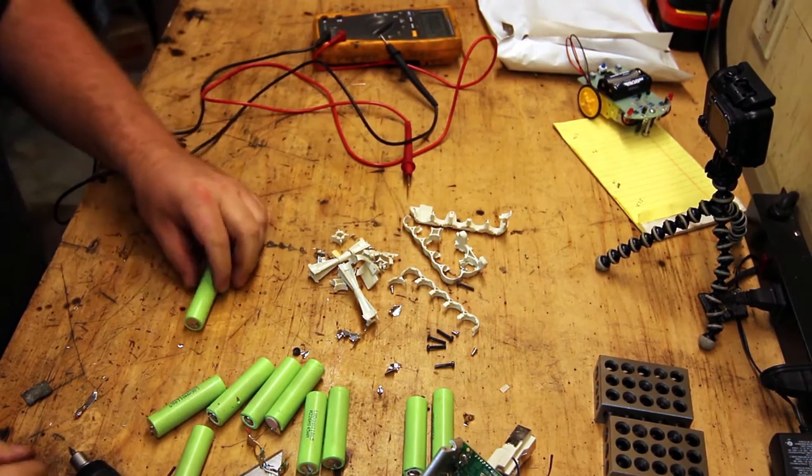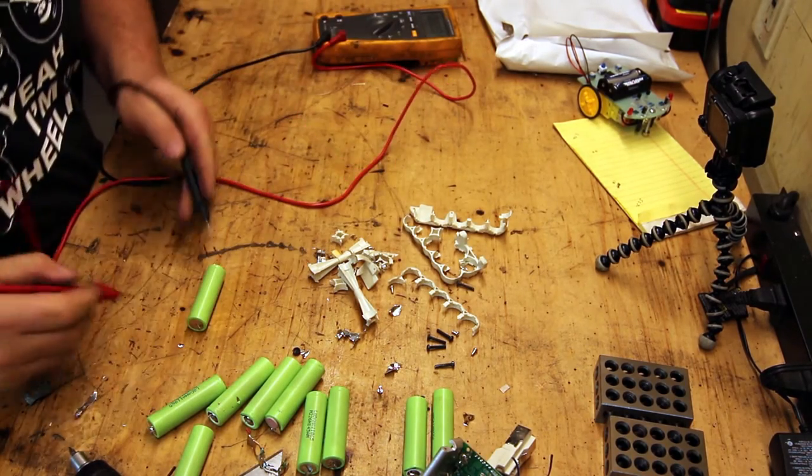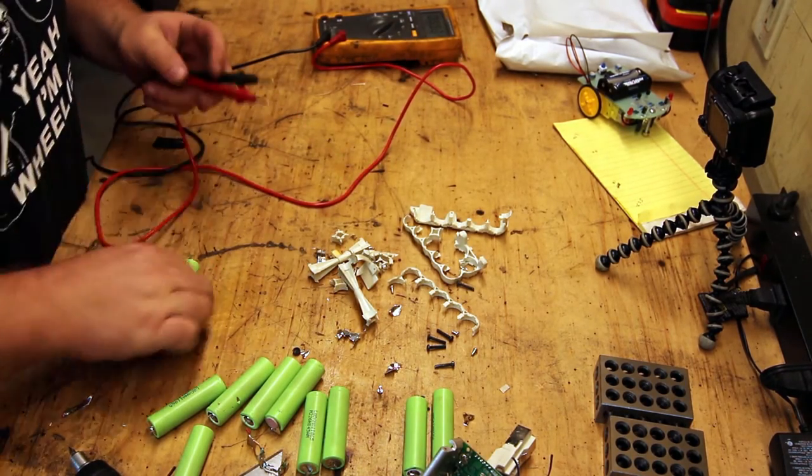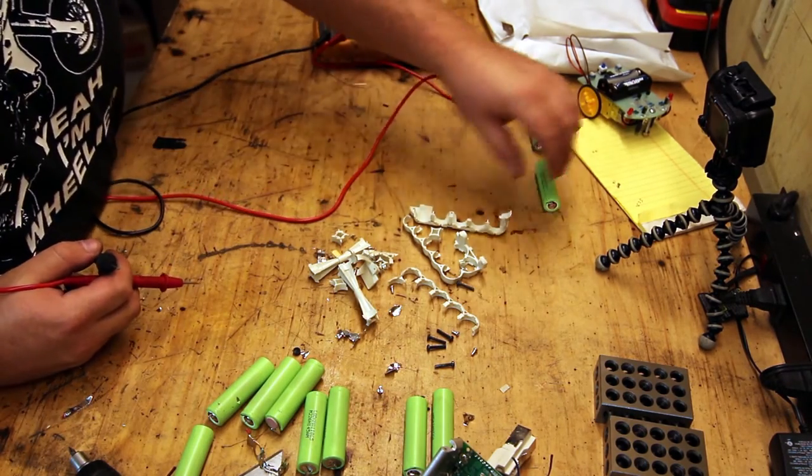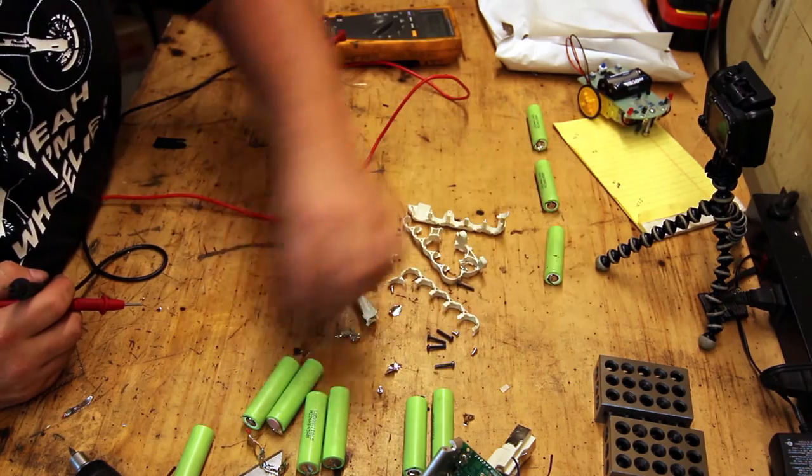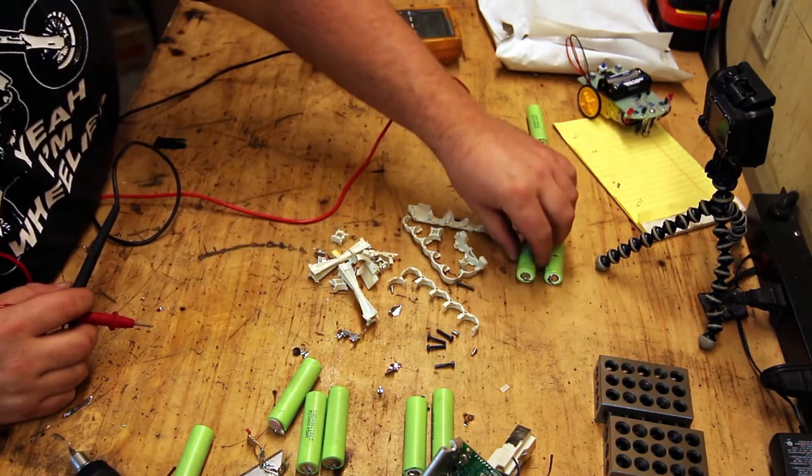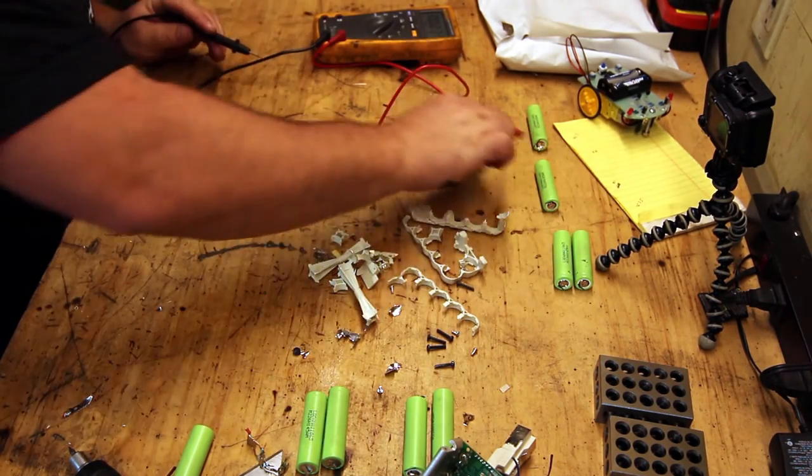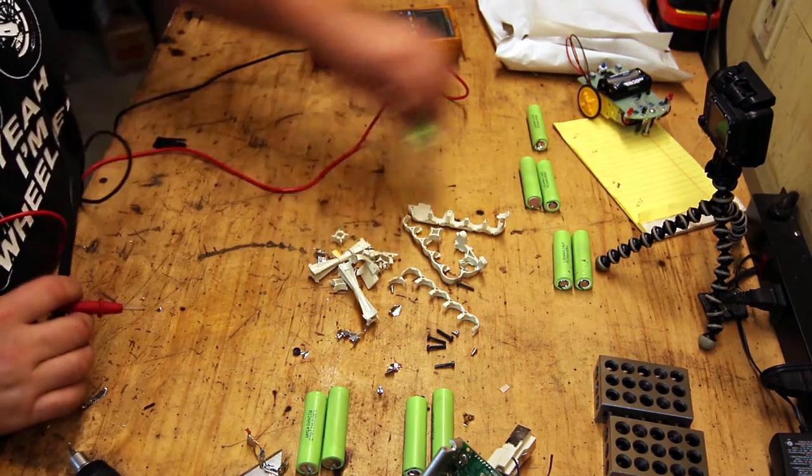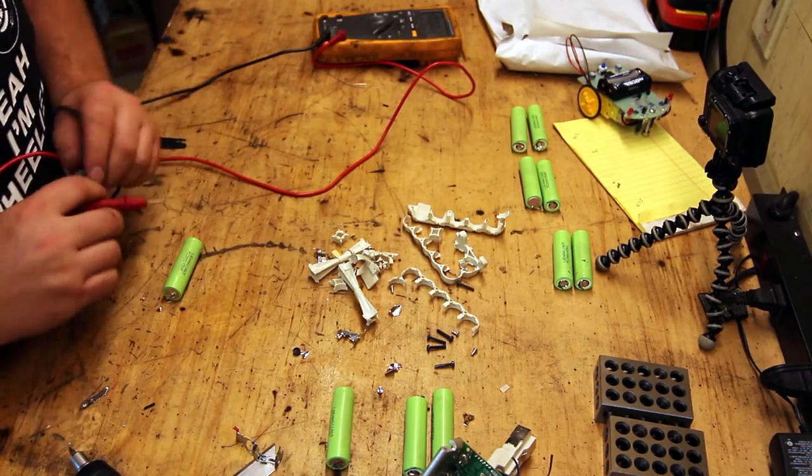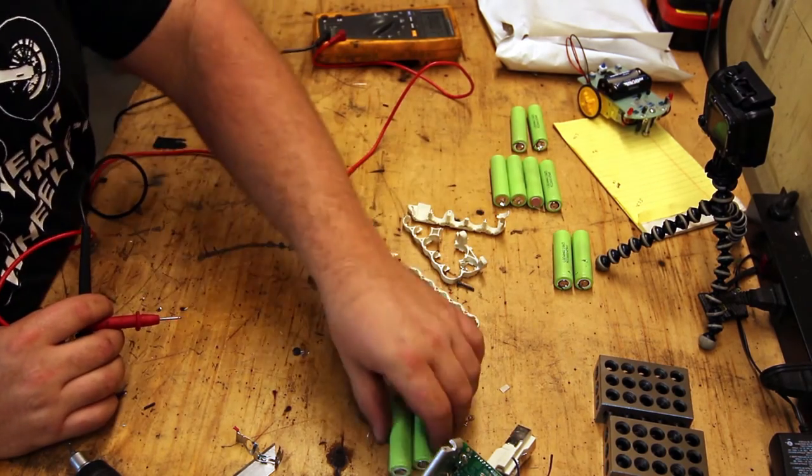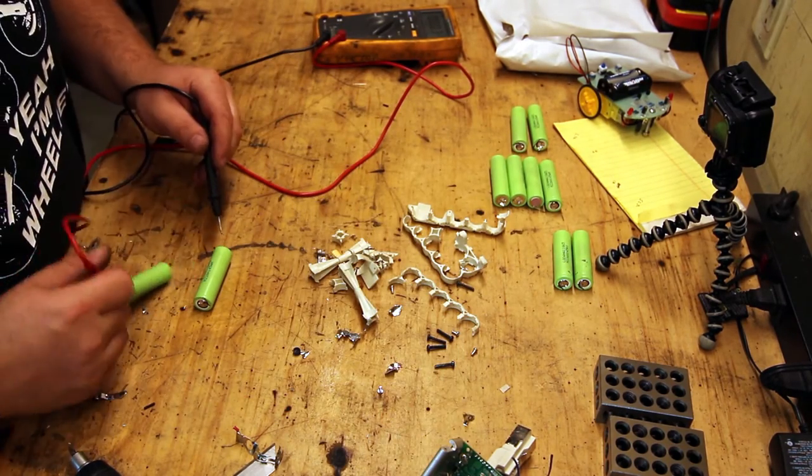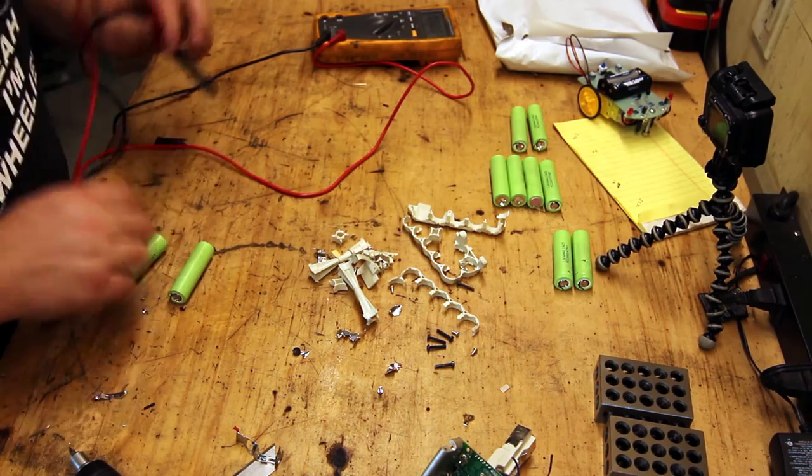So let's see what kind of voltage these things put out on their own. This one's showing half a volt, 1.1 volts, 1.3 volts, 1.3 volts, 1.1 volts, 1.1, 1.1, 0.5, 0.5.